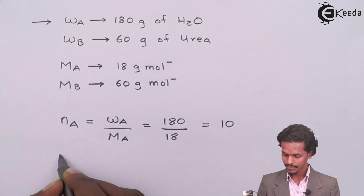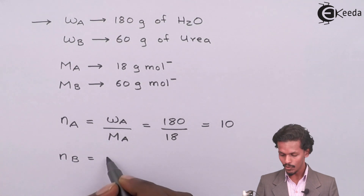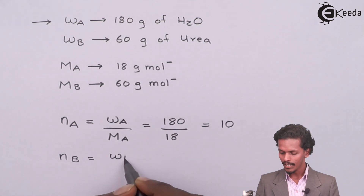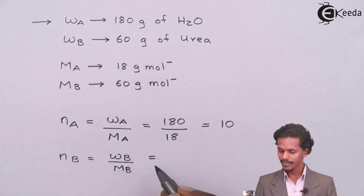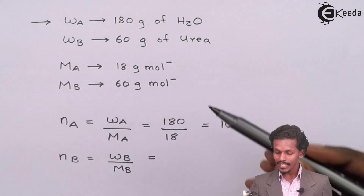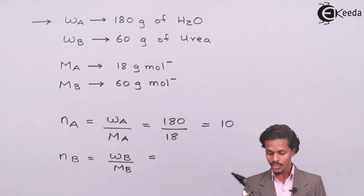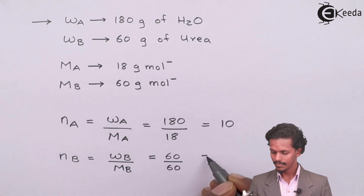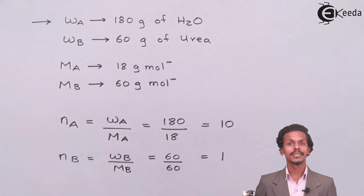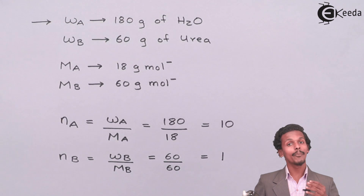Now we calculate the number of moles of solute, which is urea. The formula is N_B = W_B divided by M_B. In this case W_B is 60 and M_B is also 60, so N_B equals 1 mole. We have now calculated the number of moles of solute and solvent, which are 1 and 10 respectively.